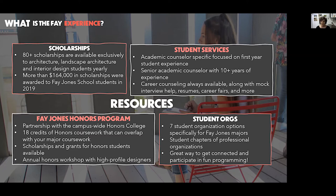We have seven specific student organizations for Fay Jones students only. These are based around discipline areas — one each for landscape architecture, architecture, and interior design — and they are student chapters of professional organizations. You can be in the student version as a college student and then graduate and join the professional organization once you're in the field, already having a sense of how these organizations are set up and the important names you need to know. We also have the National Organization of Minority Architectural Students. These organizations are a great way to get connected to the people around you and with professionals in the field, as well as to utilize your design work in fun programming.